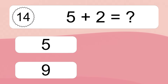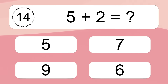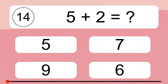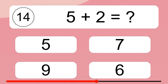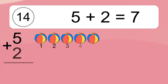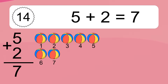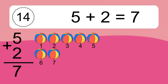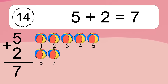5 plus 2 equals what? 5 plus 2 equals 7. Let's count it: 1, 2, 3, 4, 5, 6, 7.